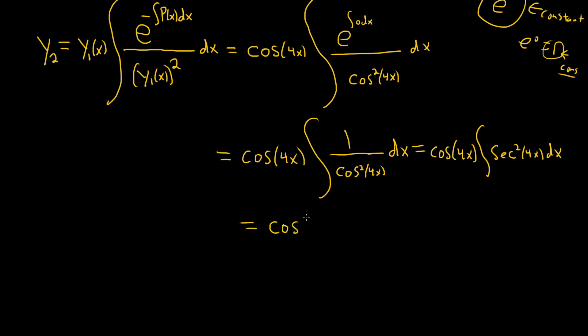So when you integrate secant squared, you get tangent. But there's a 4 here, so we just have to divide by 4. So this will be cosine of 4x times tangent of 4x, and we'll divide by 4. And don't worry about the plus c. So this is really sine over cosine. So this is 1 fourth cosine of 4x times sine of 4x over cosine of 4x. So these cancel. So you end up with 1 fourth sine of 4x.